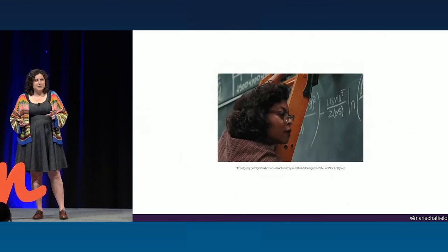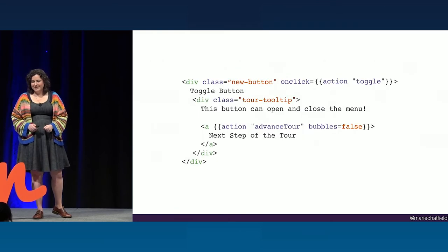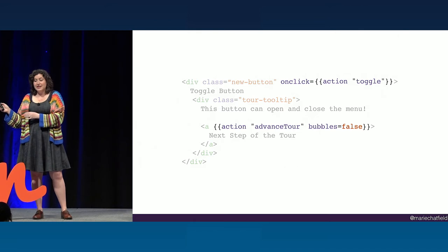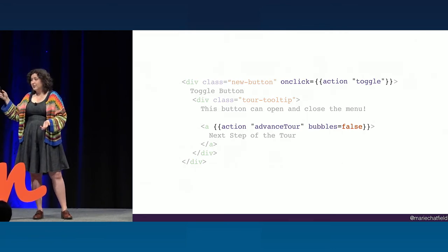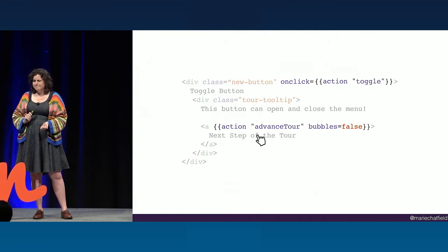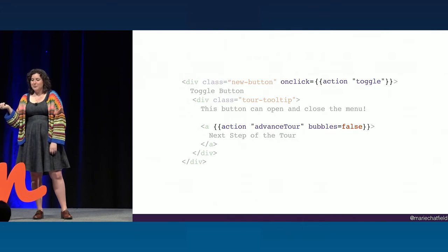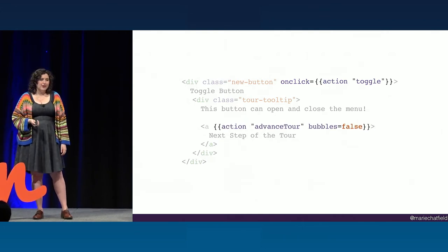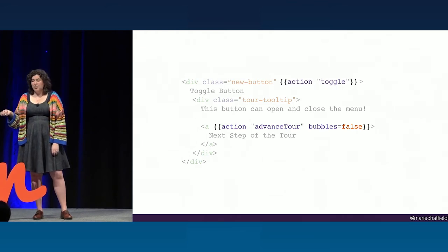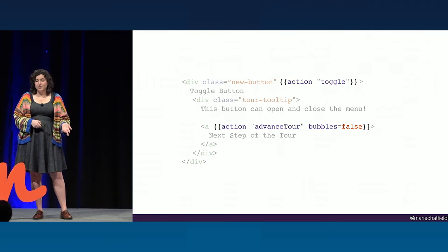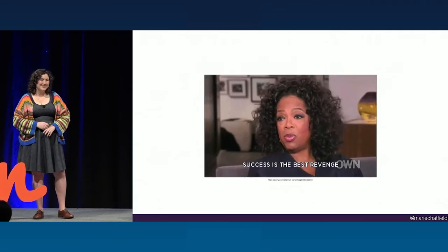Now that we understand the difference between Ember and DOM event listeners, let's go back to the original buggy code example. We have an inner child action that advances the tour by opening the menu and stops propagation, and a parent action that toggles the menu. When we click the inner button, the first action that fires is the parent — because it's a DOM event listener — so that opens our menu, and then we get down to our action that advances the tour by closing the menu. That stops propagation, so nothing else fires. One easy fix: just make the parent into an Ember event listener, so they fire in the order we expect. The child fires first, successfully stops propagation — everything works.